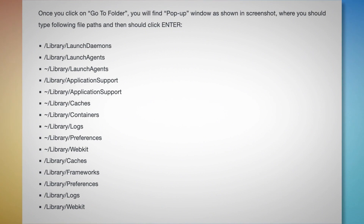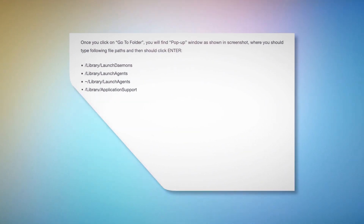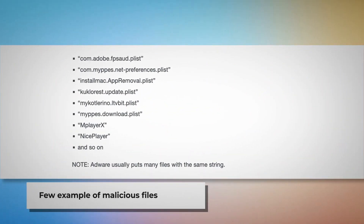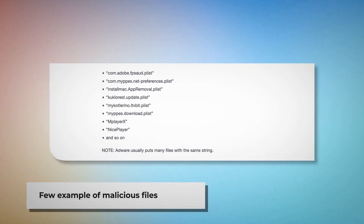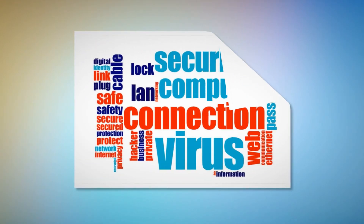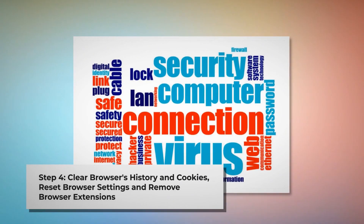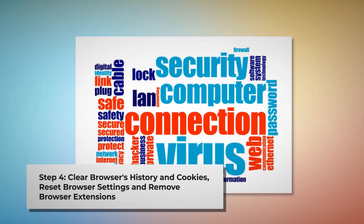Once you click Go to Folder, a pop-up window will appear where you should type these file paths and click Enter. Type paths such as /Library/LaunchDaemons, /Library/LaunchAgents, /Library/Application Support, and so on, as shown. Look for suspicious or malicious files and move them to Trash. Note: adware usually puts many files with the same string.